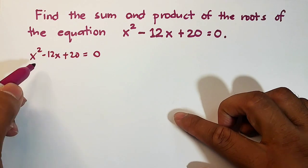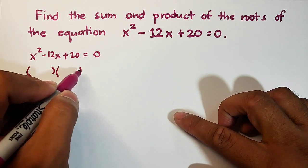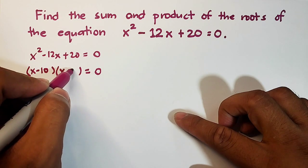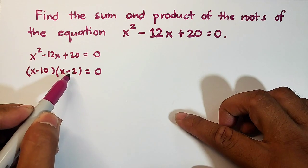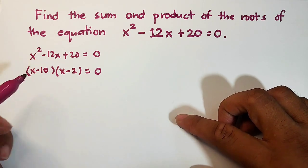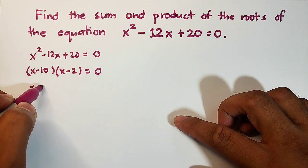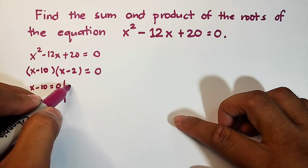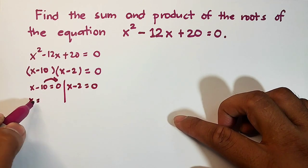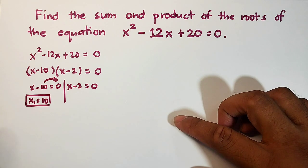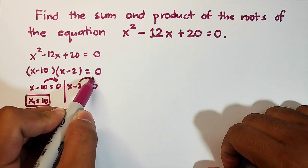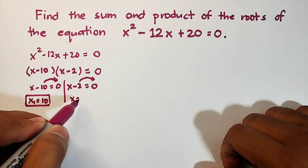By factoring, we can solve this problem. The factors are x minus 10 and x minus 2, because negative 10 times negative 2 is positive 20, and negative 10 plus negative 2 is negative 12. Solving by factoring, we have x minus 10 is equal to 0 and x minus 2 is equal to 0. Transposing, x sub 1 is equal to 10 and x sub 2 is equal to 2.